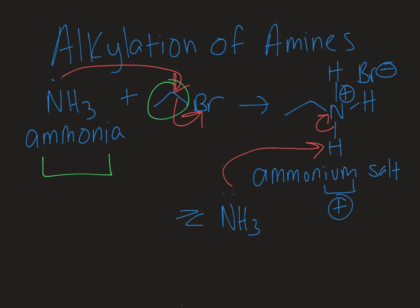I'm going to draw equilibrium arrows here for an acid-base reaction, and that would give me this compound, plus I would have an ammonium conjugate acid there. Now this is a primary amine because I have one alkyl group on it.